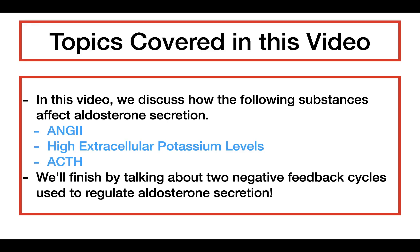In this video we're going to talk about two main things. The first thing is we're going to see how three different substances affect aldosterone secretion. We're going to look at angiotensin 2, high extracellular potassium levels, and ACTH and see how they affect aldosterone secretion. Then we're going to finish up by talking about two cycles used to regulate aldosterone secretion.